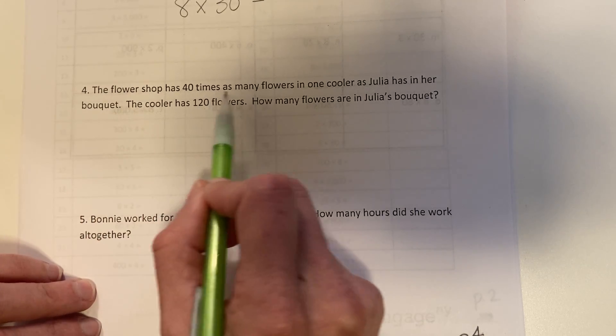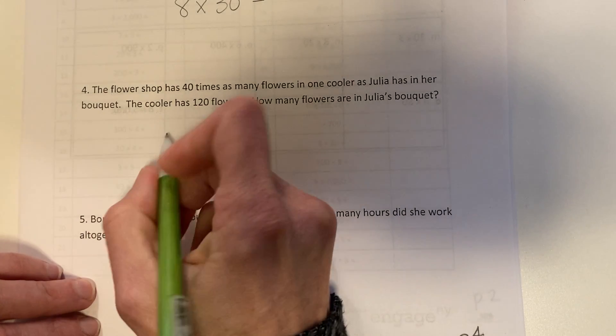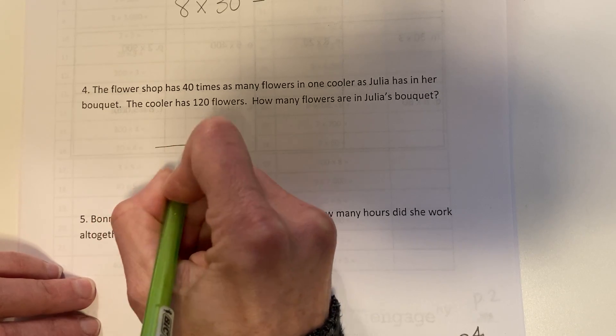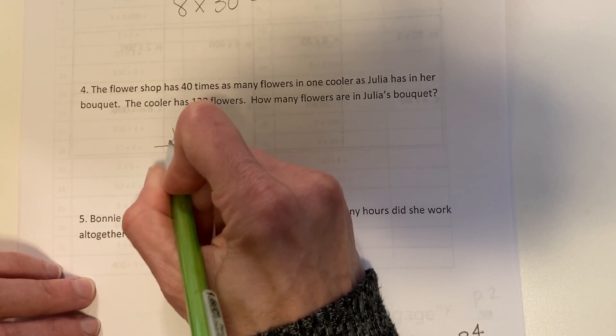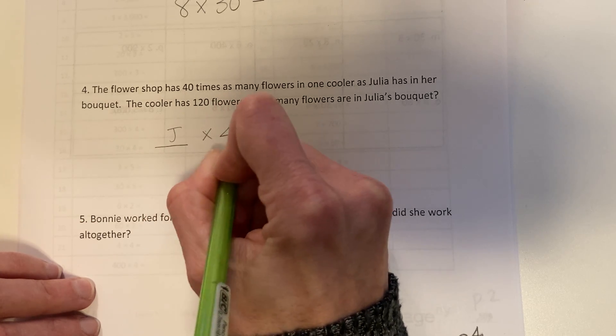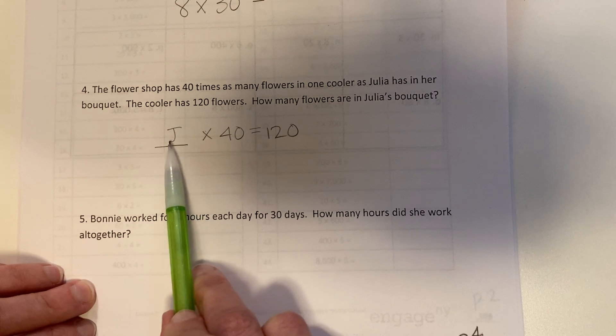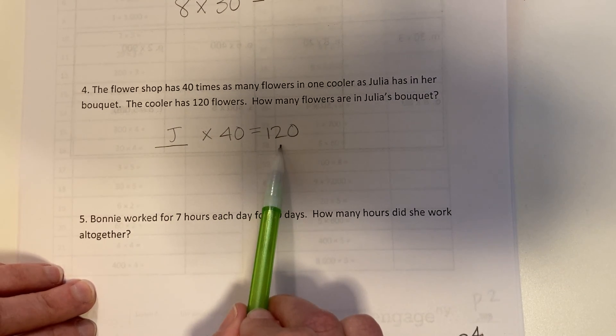The flower shop has 40 times as many flowers in one cooler as Julia has in her bouquet. So whatever she has, J for Julia, 40 times bigger would give me 120 flowers. What number times 40 would give me 120?